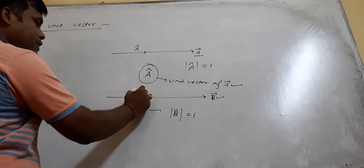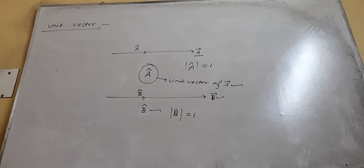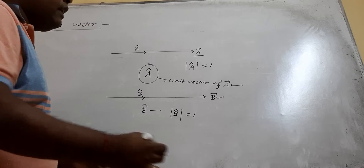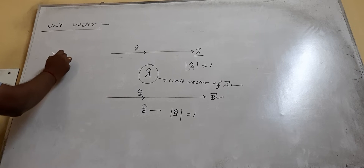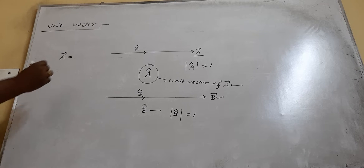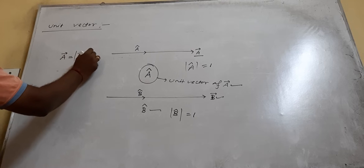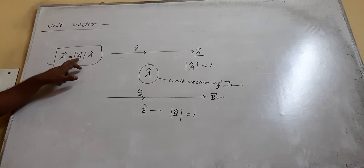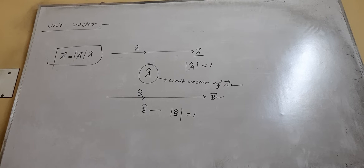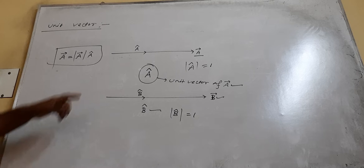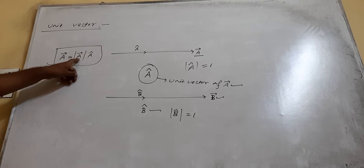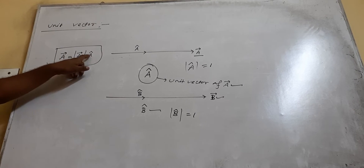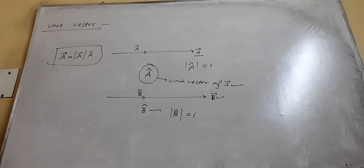How can we write a vector in terms of its unit vector? Any vector A can be written as its magnitude multiplied by its unit vector: A vector equals |A| times A-cap. The modulus gives you the magnitude. The magnitude of A-cap is 1, so when you multiply 1 with the magnitude, it remains the same. A-cap gives you the direction of A vector.